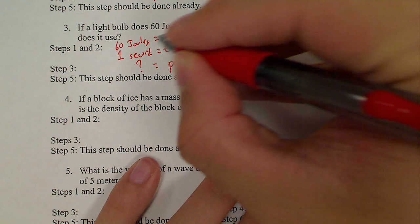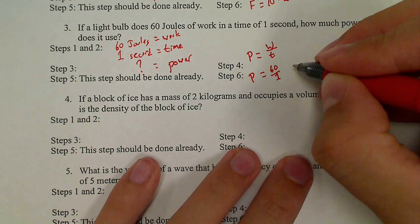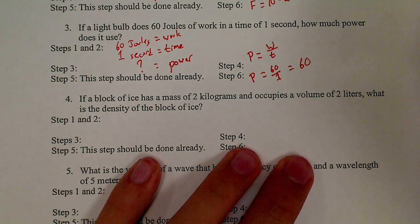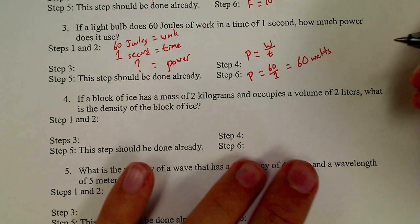Power equals work of 60 divided by a time of 1. 60 divided by 1 is 60. And I know that my units of power are watts.